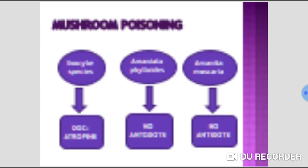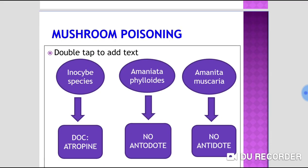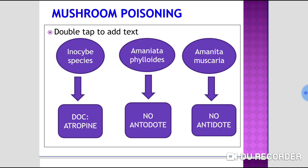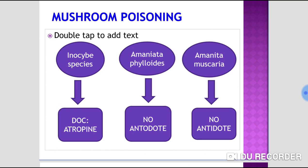Atropine is also used in mushroom poisoning, particularly for Inocybe species where it is the drug of choice. However, for other species like Amanita phalloides or Amanita muscaria, there is no specific antidote and atropine is contraindicated.